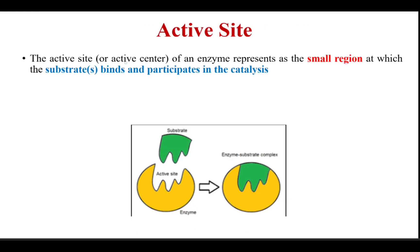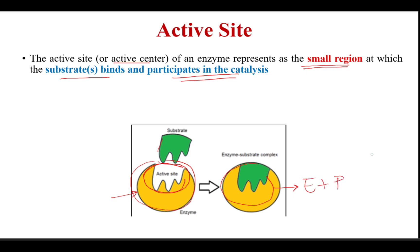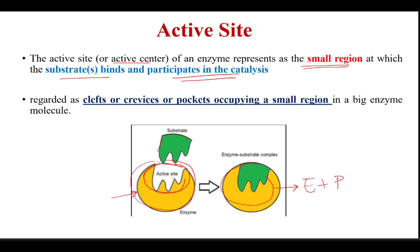What actually is the active site? The active site, or active center of an enzyme, represents a small region at which the substrate binds and participates in catalysis. The active site is a smaller proportion of the big enzyme, and to this smaller region the substrate binds, forming an enzyme-substrate complex which gets converted into enzyme plus product. These active sites are basically regarded as clefts, crevices, or pockets occupying a small region in the big enzyme molecule.